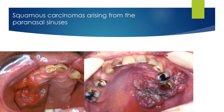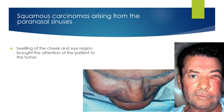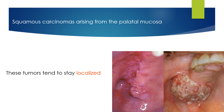This slide shows an example of squamous carcinomas arising from the paranasal sinuses. Because there is no pain before ulceration, patients think this is a lesion caused by periodontal abscess or trauma from a denture. These are another two examples of squamous carcinomas arising from the paranasal sinuses. The swelling only brought the attention of the patient to the disease. Squamous carcinomas can also arise from the palatal mucosa, and these tumors tend to stay localized.